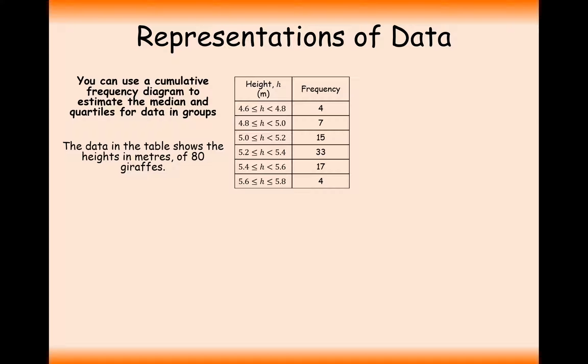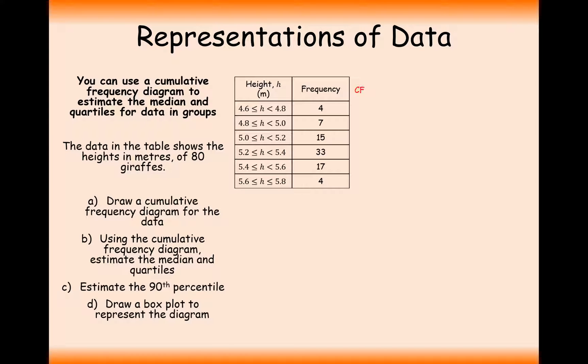The heights will be on the x-axis and we'll see later as to why that might be a useful diagram to work with. The first thing you need to do in drawing a cumulative frequency diagram is to plot a cumulative frequency column onto the side of your data table. So it's going to be 4, and we're going to accumulate the frequencies as we go through: 4 add 7 is 11, then add 15, then add 33, then add 17, and then add 4. Just do a little check that we've got 80 giraffes accounted for here.